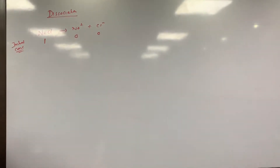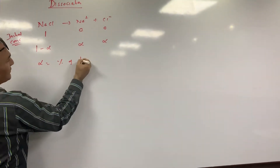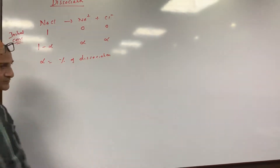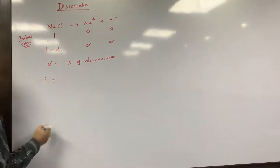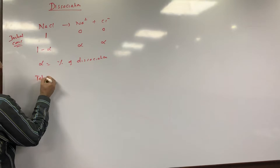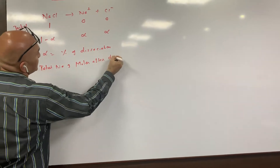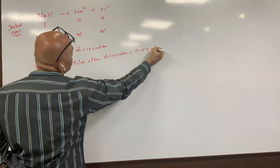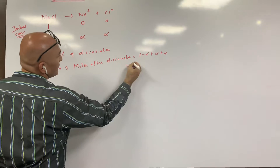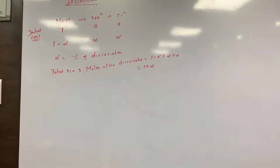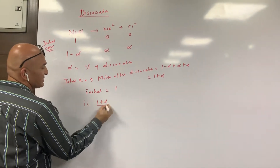Now suppose the degree of dissociation is α. The undissociated NaCl becomes 1 − α, Na⁺ becomes α, and Cl⁻ becomes α. So i equals total moles after dissociation over initial moles. Total after dissociation = (1 − α) + α + α = 1 + α. Initial is 1, so i = (1 + α) / 1 = 1 + α.